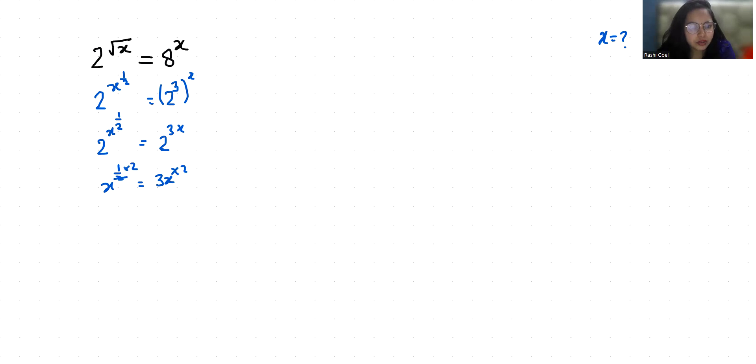So x = (3x)^2. So x = 9x^2. So x - 9x^2 = 0.